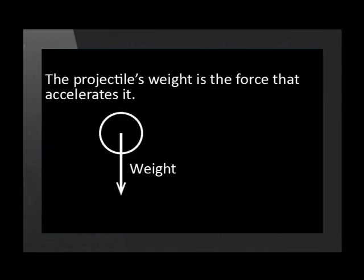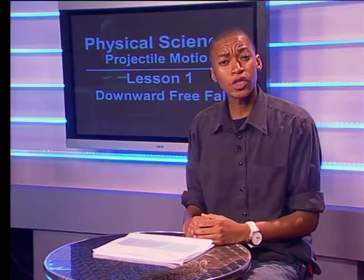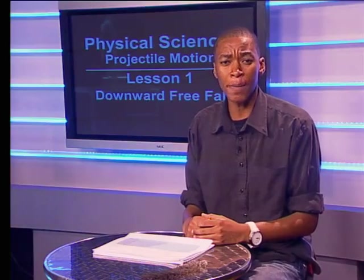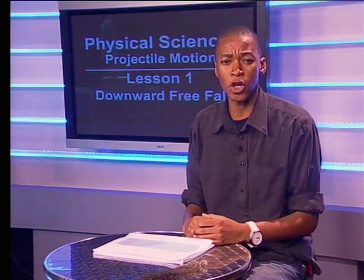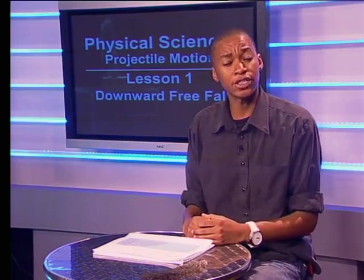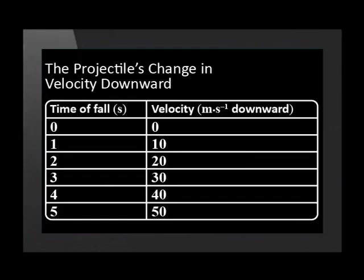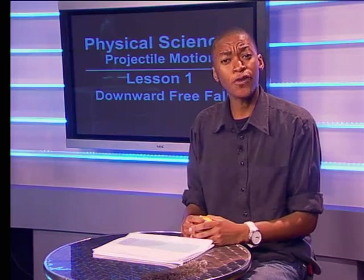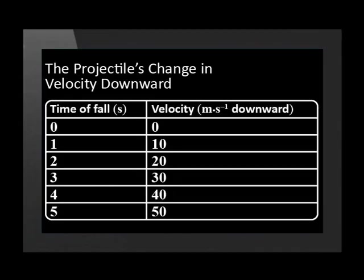The projectile's weight is the force that accelerates it. Let's look more closely at the data about the projectile's change in velocity as it falls downwards. Notice that as time passes, the projectile's velocity increases — the projectile gets faster and faster as it falls downwards.